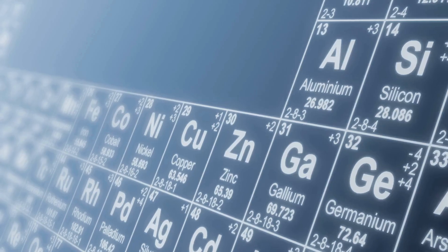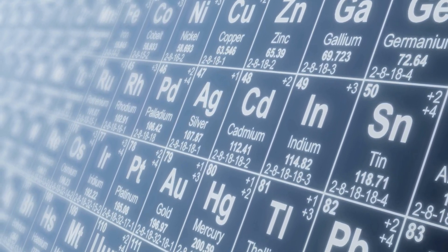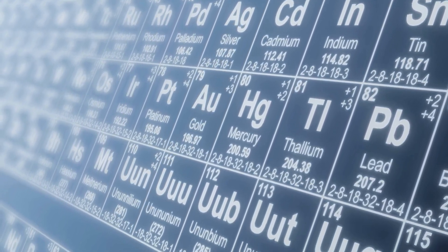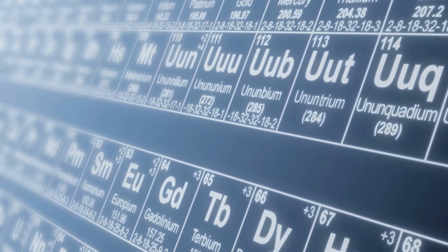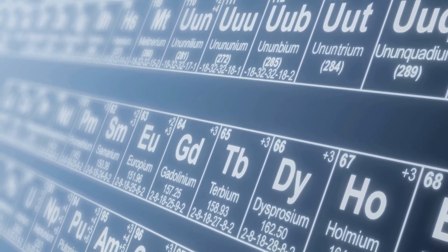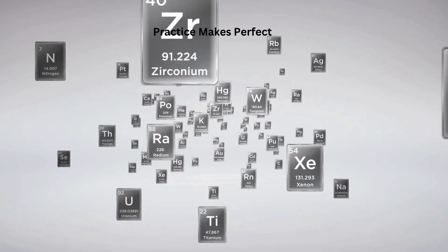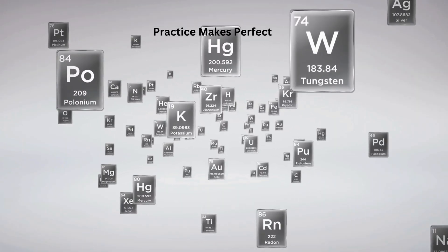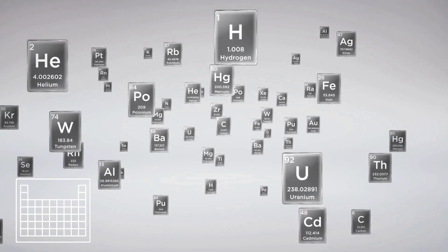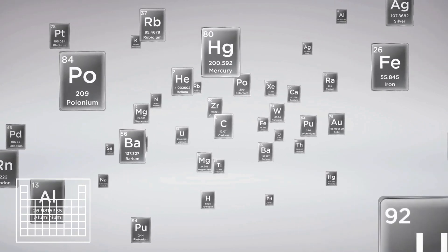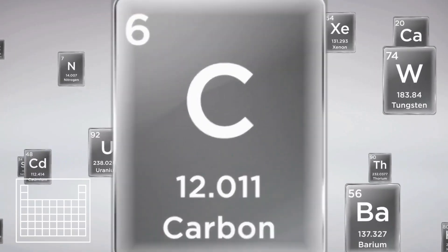You'll want to break up the table into groups of around 10 elements at a time to learn the whole table this way. Rather than use mnemonics for the whole table, you could make up a phrase for sections that are giving you trouble. Practice makes perfect — print multiple copies of the blank periodic table to practice filling in the symbols or names of the elements. It's easiest to learn the element symbols that go with the names.